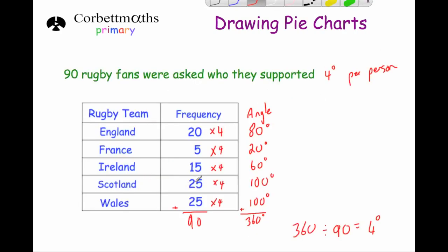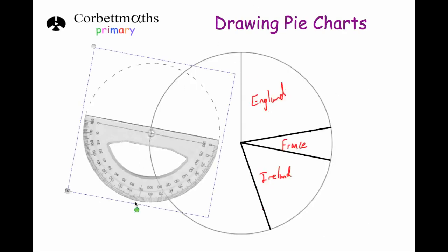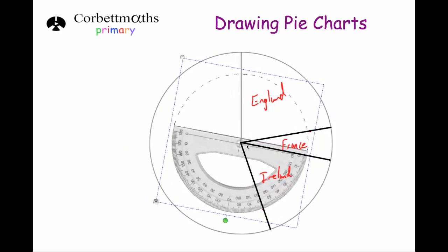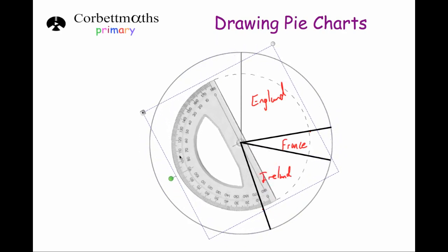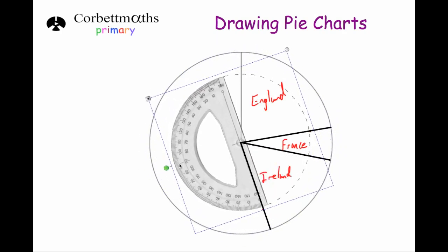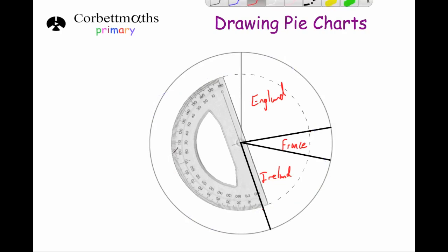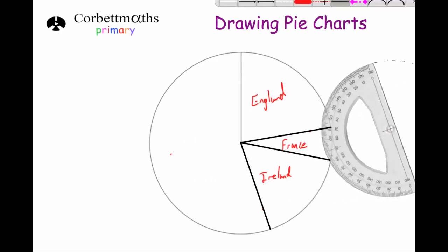The second last region is for Scotland and that's 100 degrees. Get the protractor and put the centre on the centre of the pie chart. Rotate so the zero on the outside is on the line we've just drawn. Go round to 100 degrees and put a dot. Move the protractor, get a ruler and join it up from the centre of the circle to the edge through that point. Label that section Scotland.